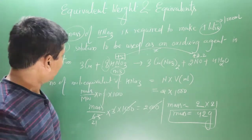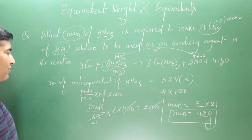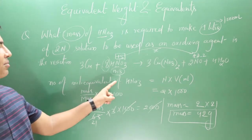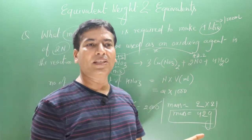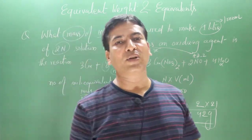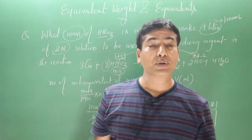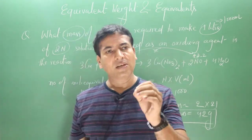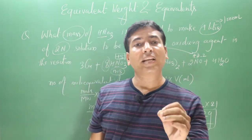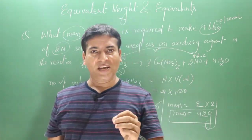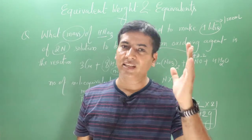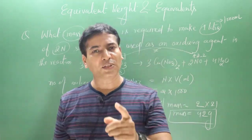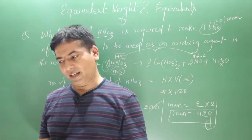Use milliequivalents always when normality or molarity is given in the numerical. Number of milliequivalents of nitric acid = normality × volume in milliliters.